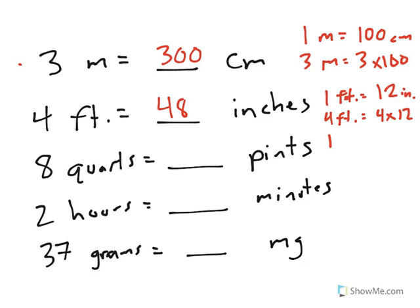8 quarts equals how many pints? Well, 1 quart is the same as 2 pints. So then 8 quarts would be equal to 8 times 2 or 16 pints.